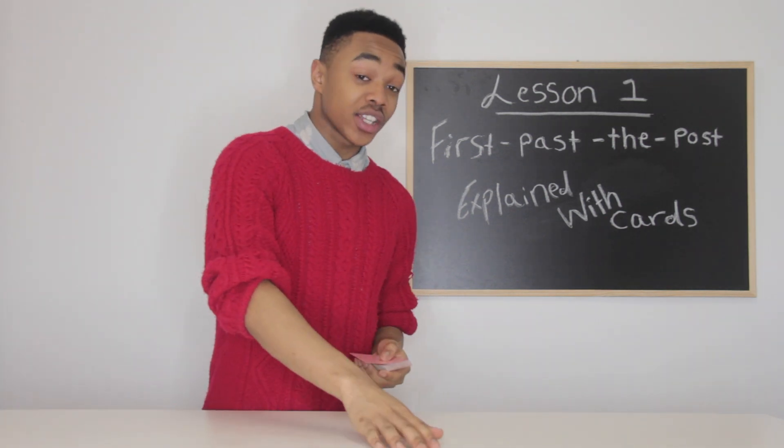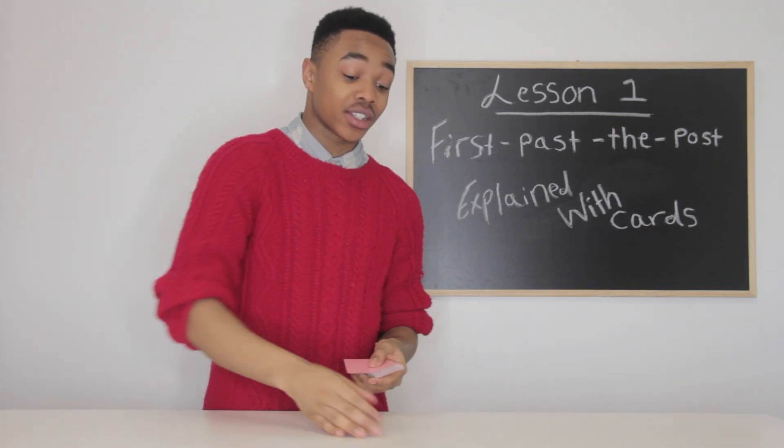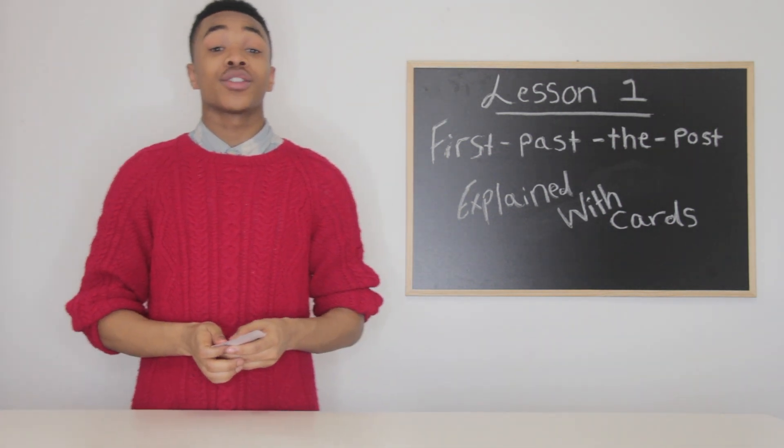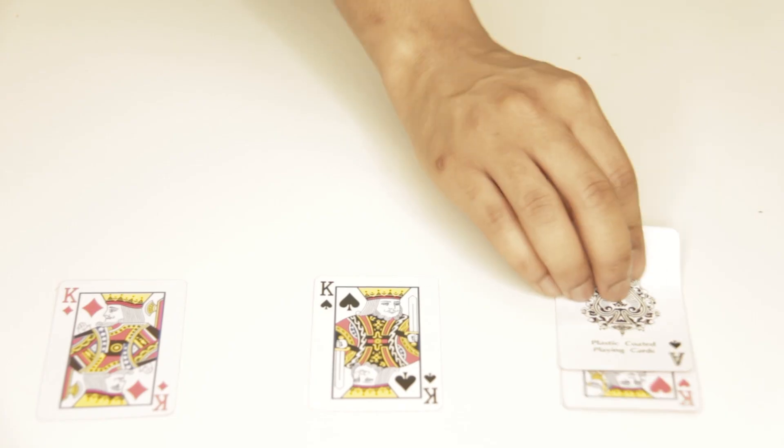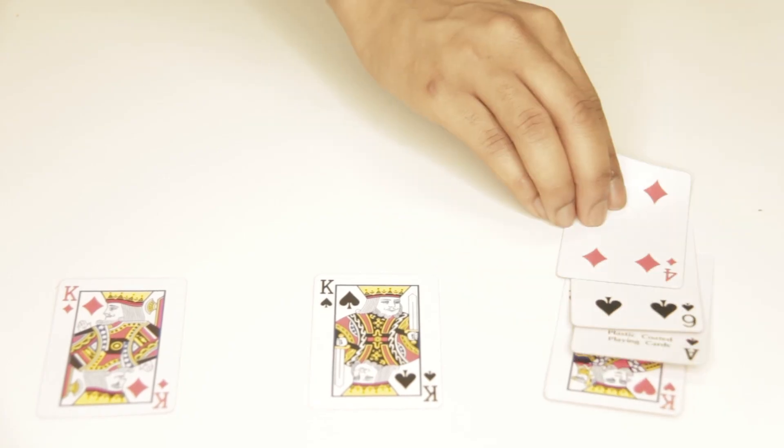So for Tom, which is the Liberal Democrats, out of ten votes, Tom has four. So we have one, two, three, four.